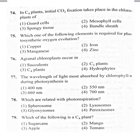The presence of bundle sheath cells in C4 plants is usually referred to as Kranz anatomy. So C4 plants show a special type of anatomy called Kranz anatomy. In C4 plants, initial carbon dioxide fixation takes place in the mesophyll cells. The C3 cycle occurs in the bundle sheath cells, but initial carbon dioxide fixation takes place in the mesophyll cells. The 74th question correct option is mesophyll cells.